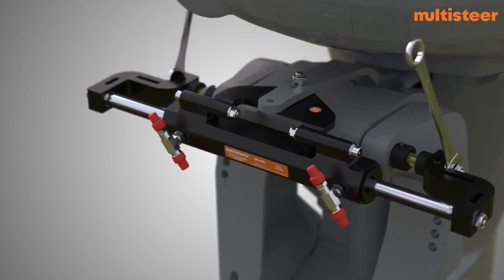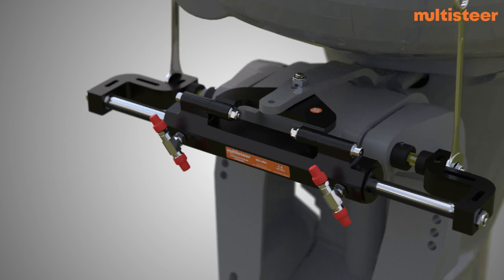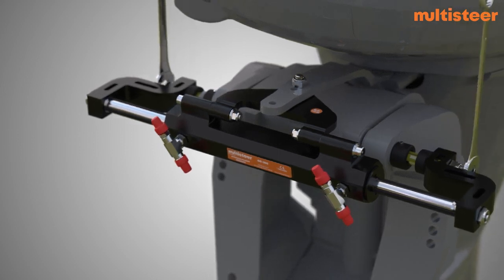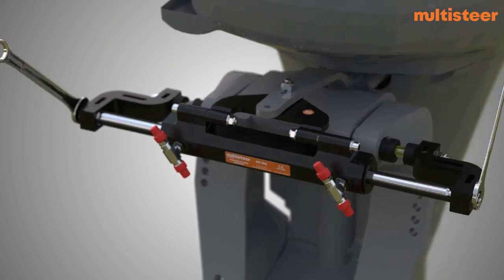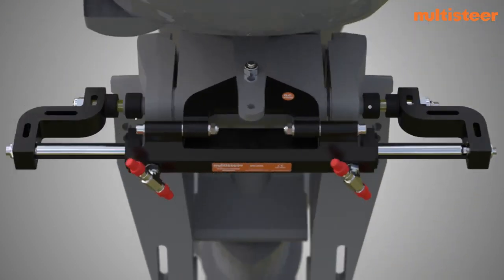Grease the nylock nut threads with any anti-seize grease. Insert the washers and nylock nut at the end of the piston and support rod and tighten them. Adjust the space on the tilt tube by tightening the mounting spacers until the clearance between tilt tube and spacers is eliminated.